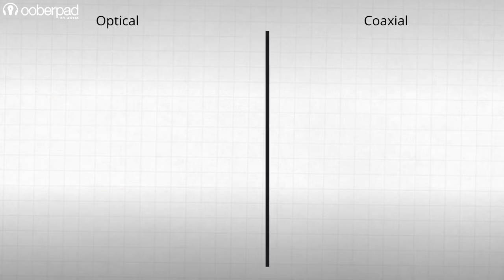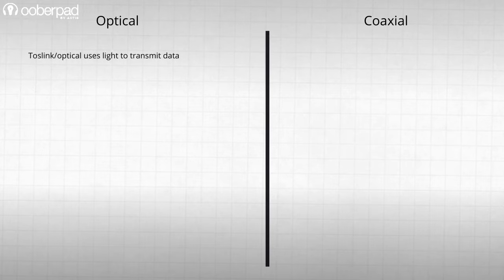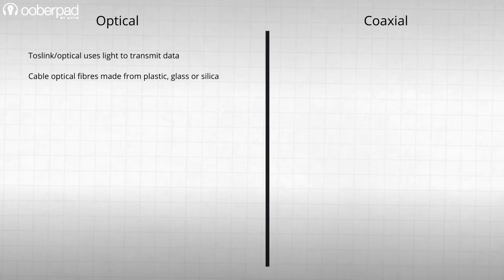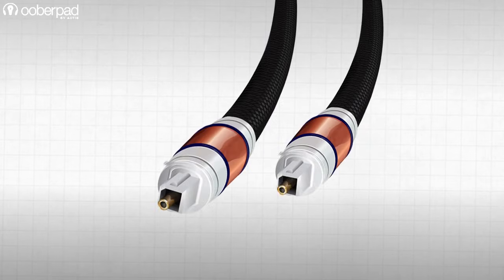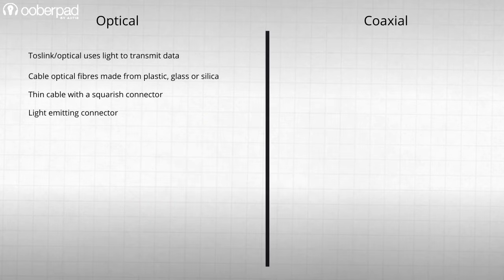Optical, or TOSLINK as it is also called, uses the medium of light to transmit data through the cable's optical fibers, which are usually made from plastic, glass, or silica. It usually sports a thinner cable and is terminated with a unique squarish connector, and is easily identifiable thanks to the light the connector emits.